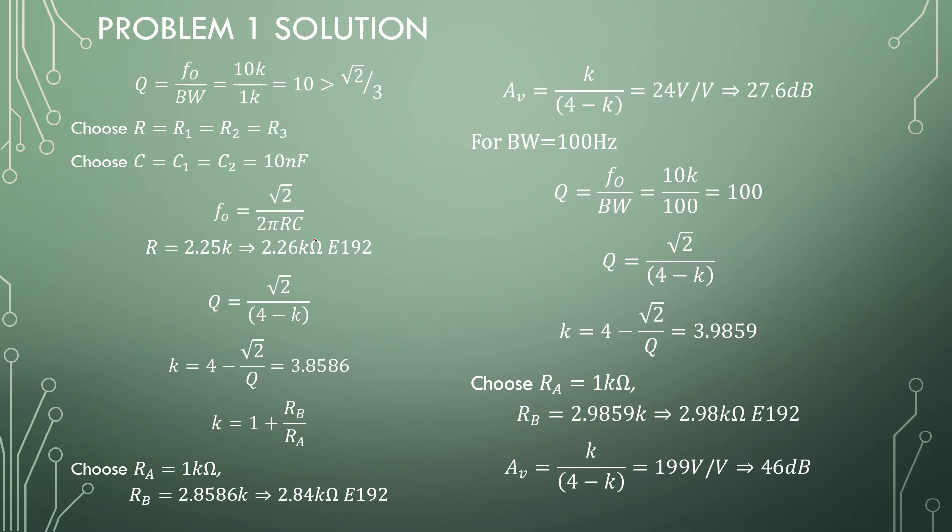Alright, the solution. So first, we calculate the Q-factor. We take our center frequency, divide it by the bandwidth, and we get a Q of 10, which is larger than the root of 2 over 3. Choose all our capacitors the same, all our resistors the same, and choose your capacitor 10 nanofarads. You always choose the capacitor first.